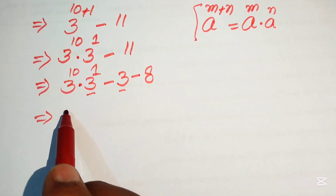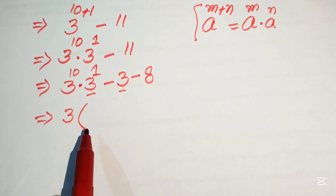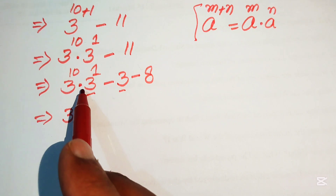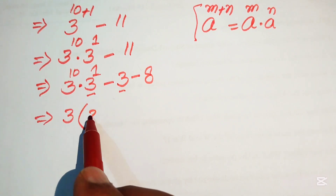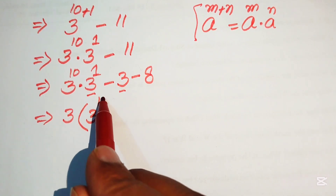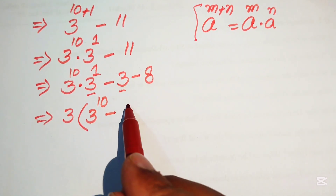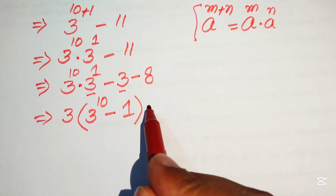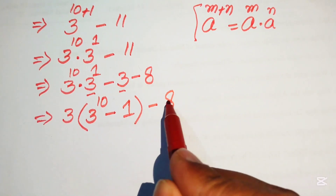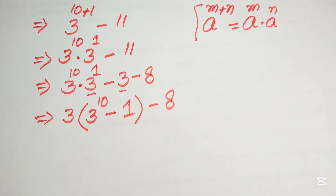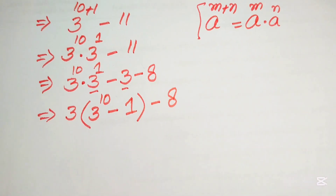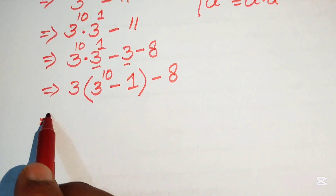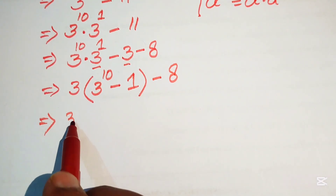We take 3 as a common factor. The remaining terms are: when you take out 3, the first term becomes 3 to the power of 10; then minus 1; and then minus 8 remains.